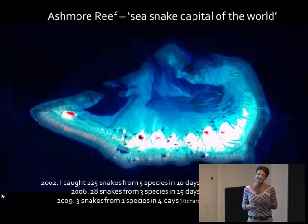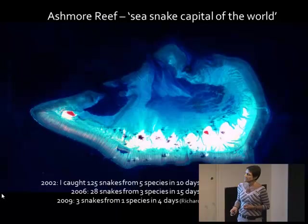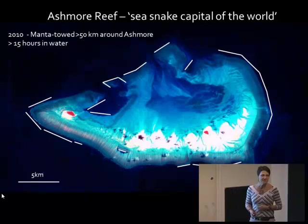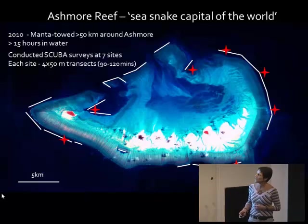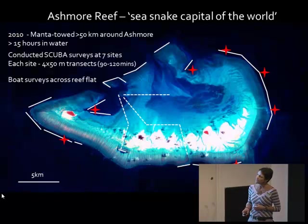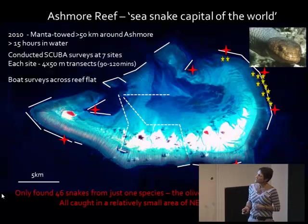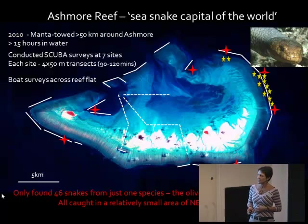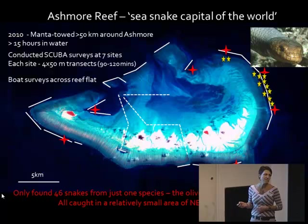There's been a lot of anecdotal information about sea snakes disappearing from Ashmore Reef. Last year I went to Ashmore Reef on the Ashmore Guardian, the Australian Customs Vessel, and did dedicated surveys: 50 kilometres of manta towing all around the reef, more than 15 hours in the water, as well as scuba surveys at sites where sea snakes were previously known to be highly abundant, and boat surveys across the reef flat. Basically, I only caught 46 snakes from just one species — the olive sea snake — all captured in one part of Ashmore Reef. There were no sea snakes anywhere else on Ashmore Reef.